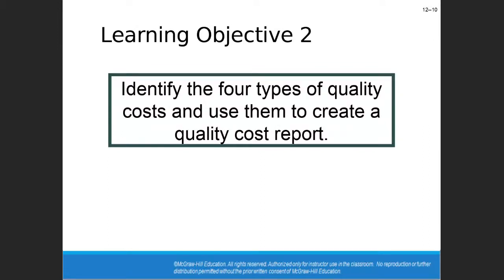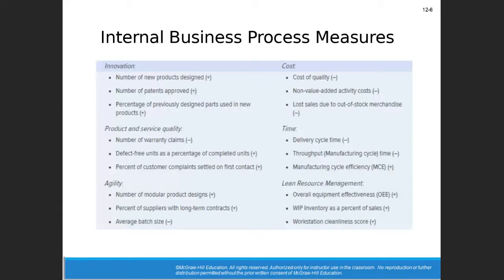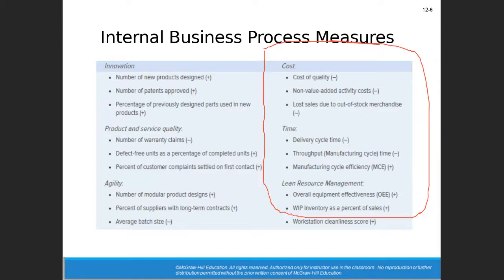Looking at business process measures — customer measures belong to marketing, learning and growth to human resources and management, but internal business processes somewhat belong to management and some to accounting. That's what we're going to talk about for the rest of this chapter, starting with cost of quality. If we're working hard on Six Sigma-ing quality, we may have spent a lot of money without improving financial performance, so we want to track the cost of quality.